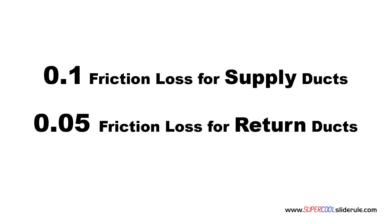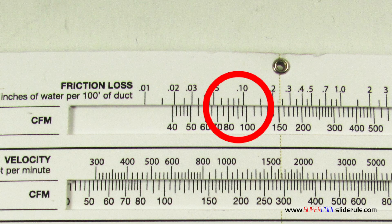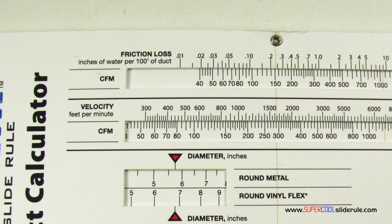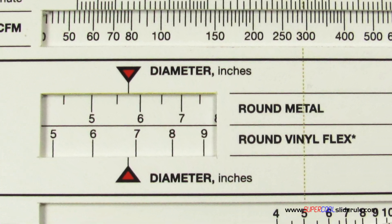We use .1 for all supply ductwork and .05 for all return air ducts. Indexing 96 under the .1 looks just like this. Next, we reference the flexible duct window and note that the closest duct size is 7 inch. When between two duct sizes, as shown here, always choose the larger size. Repeat this process for all supply ducts.